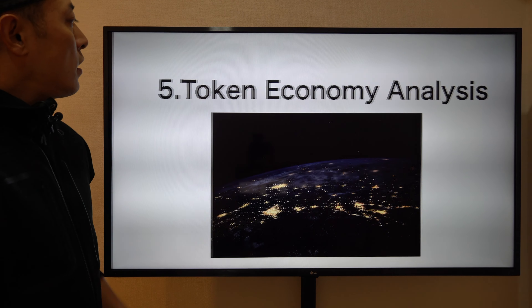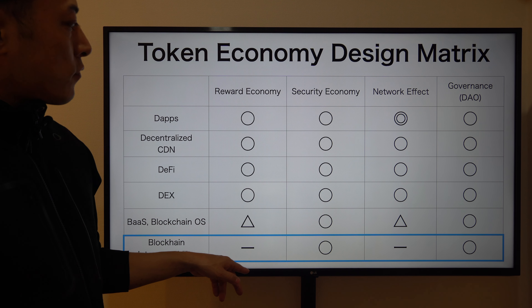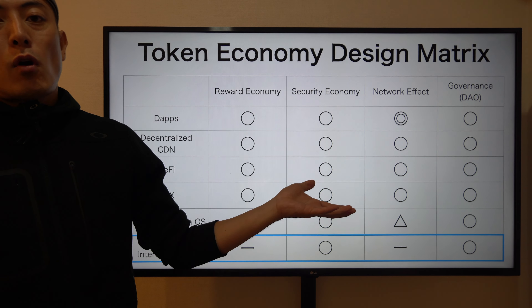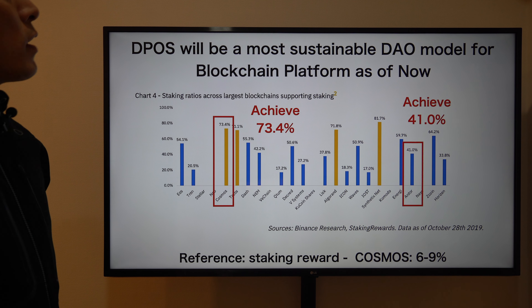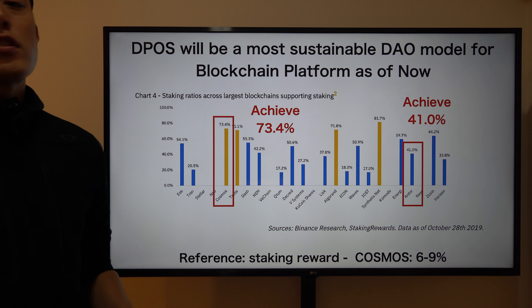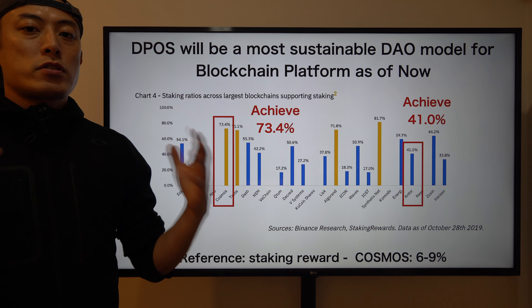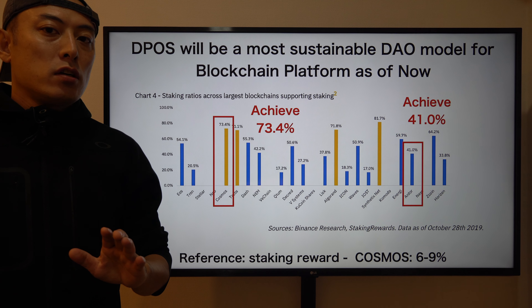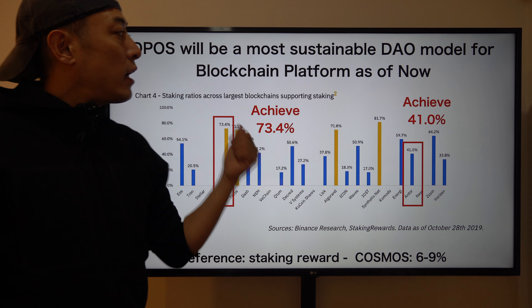Number five: token economy analysis. For blockchain interoperability, the key items to focus on are security economy and governance — especially governance, which is extremely important because the DAO is a key element for blockchain interoperability software. DPoS will be the most sustainable DAO model for blockchain platforms from a security economy perspective. The miners who can join the validation network inside Cosmos or Ardor are selected players through a decentralized selection process.